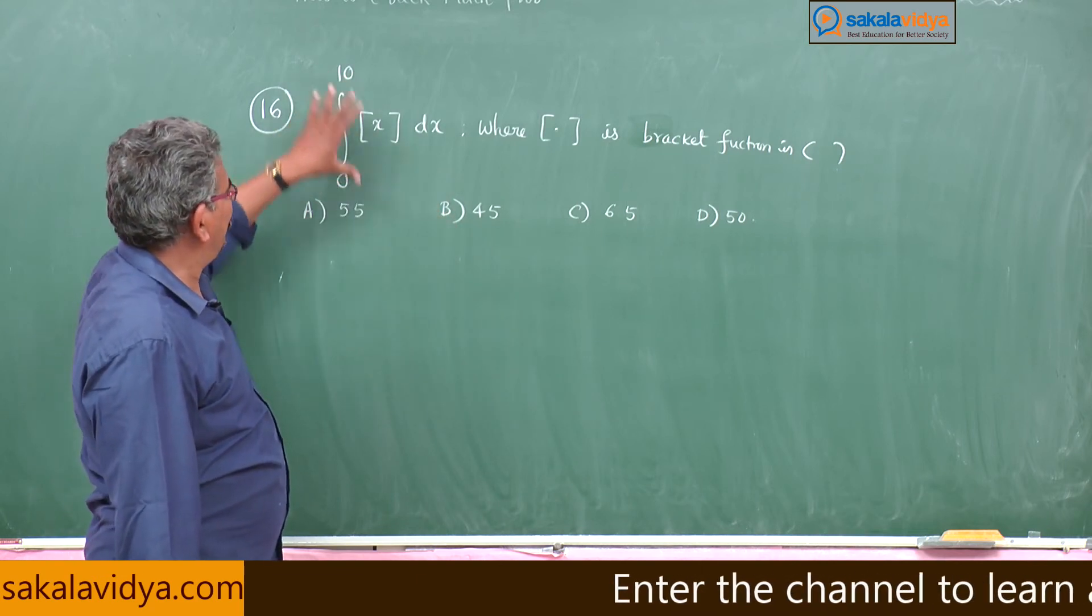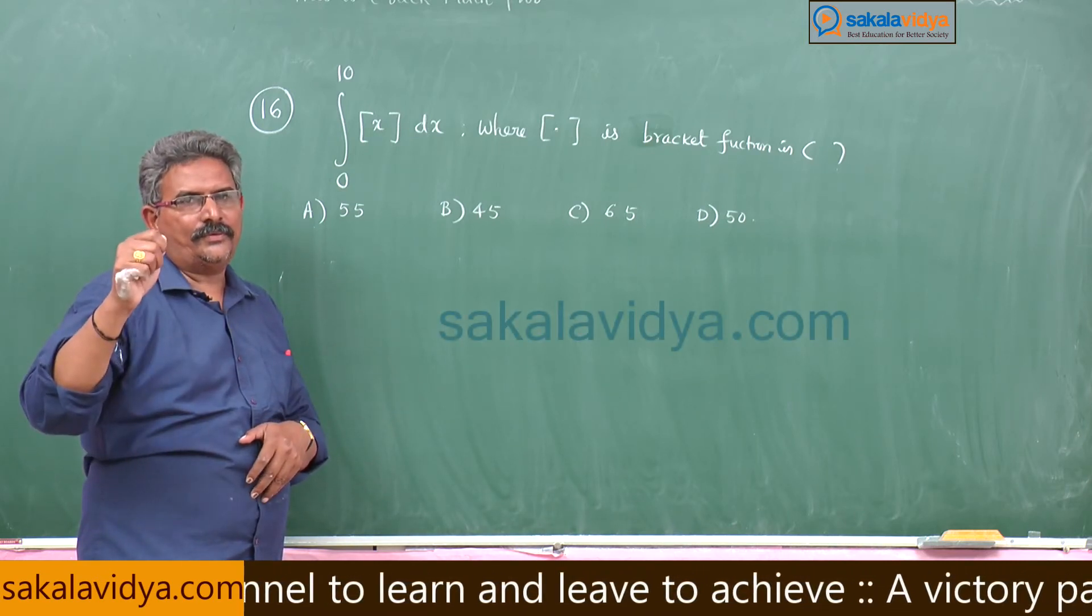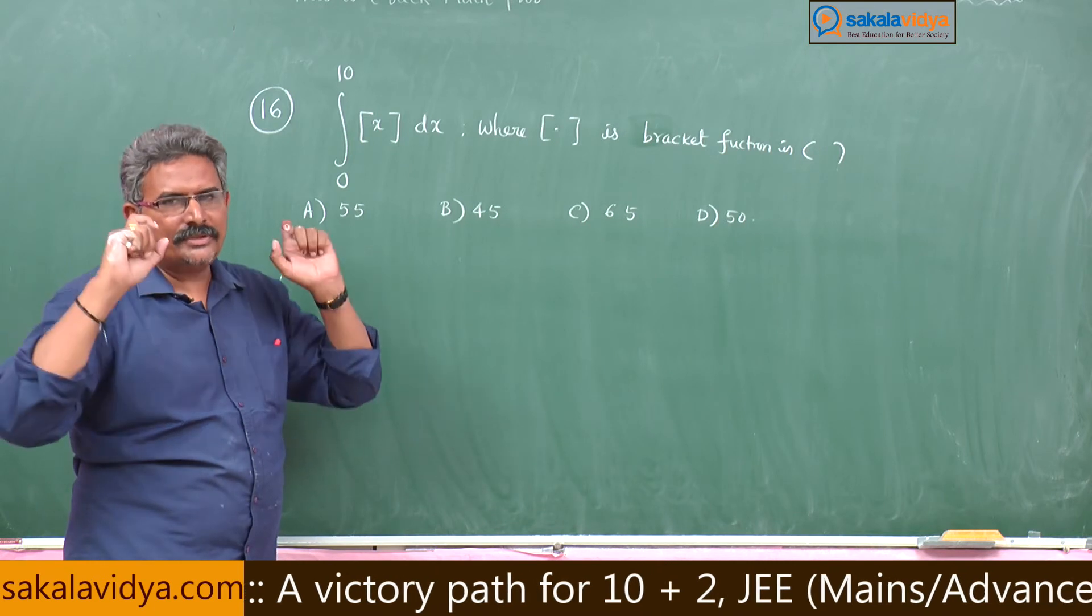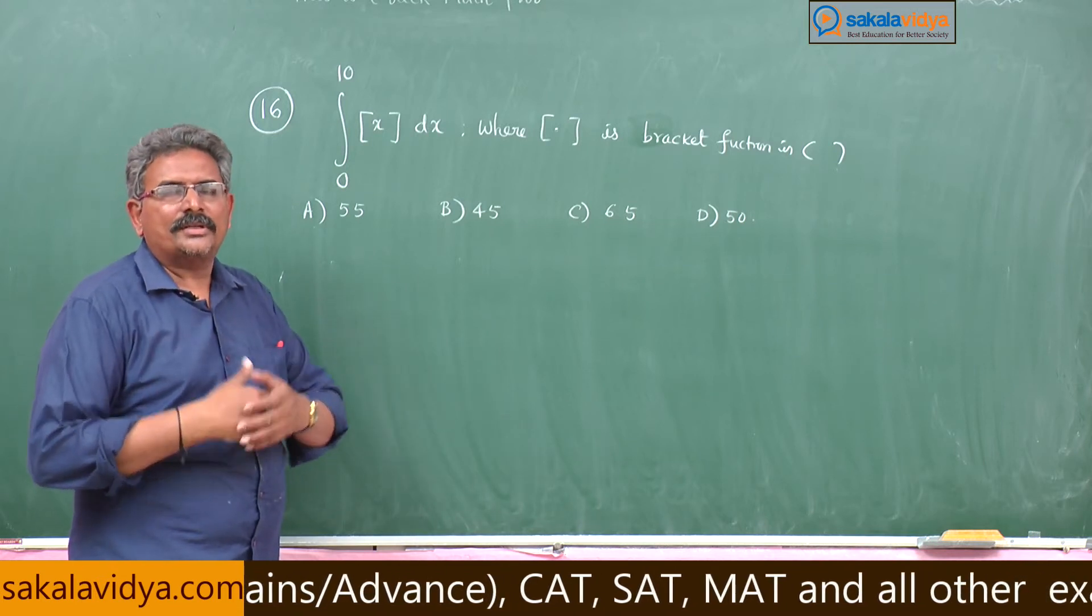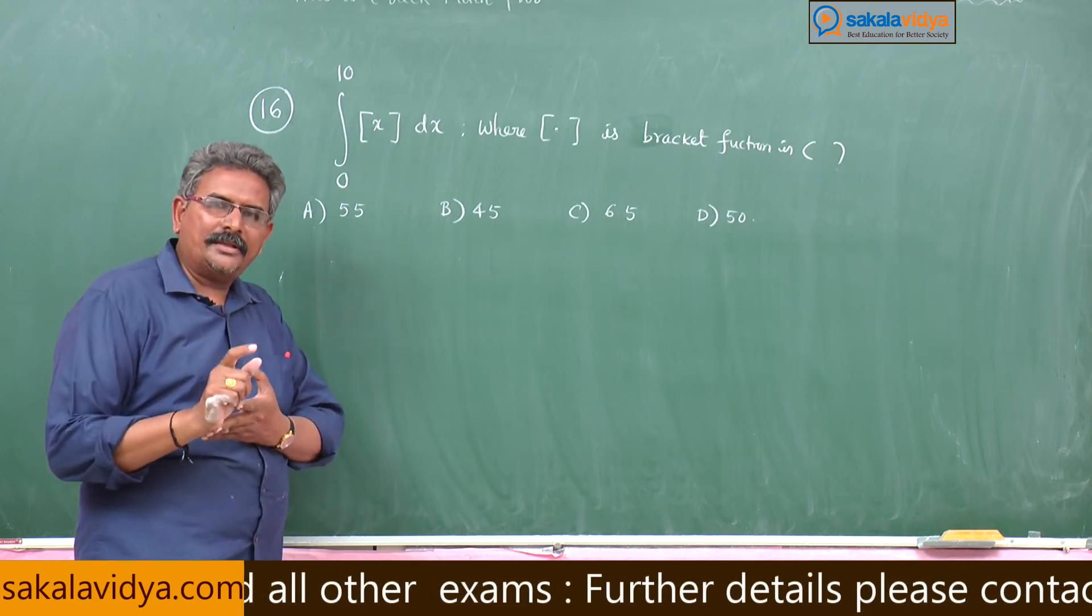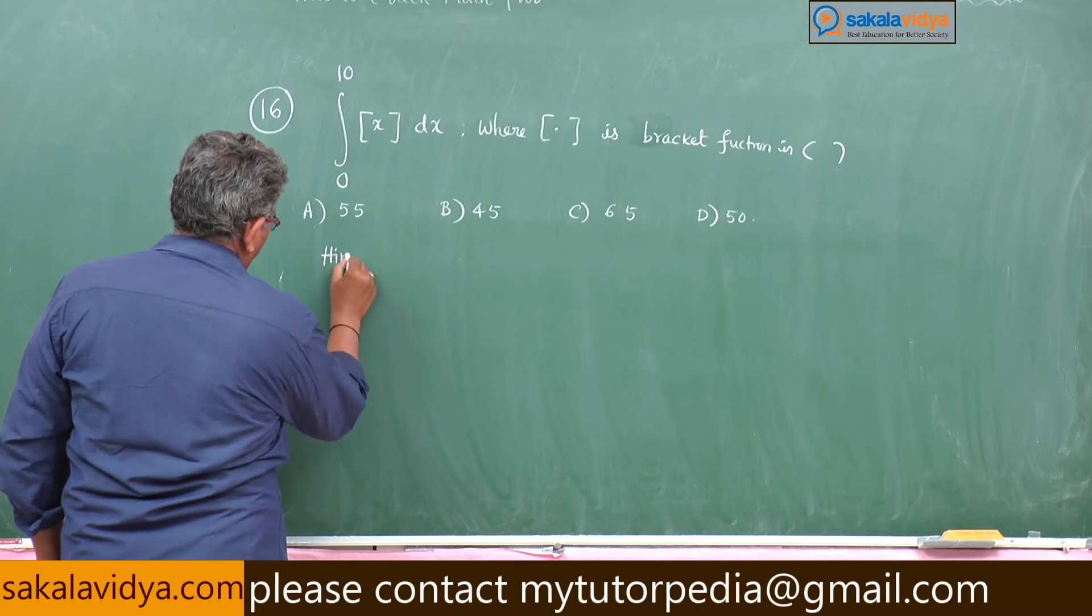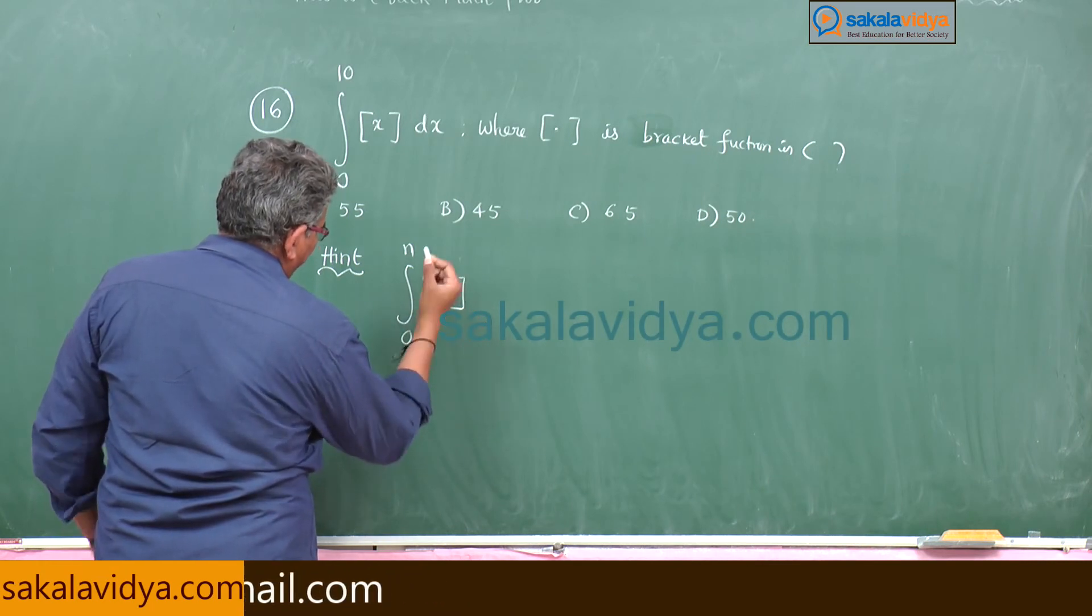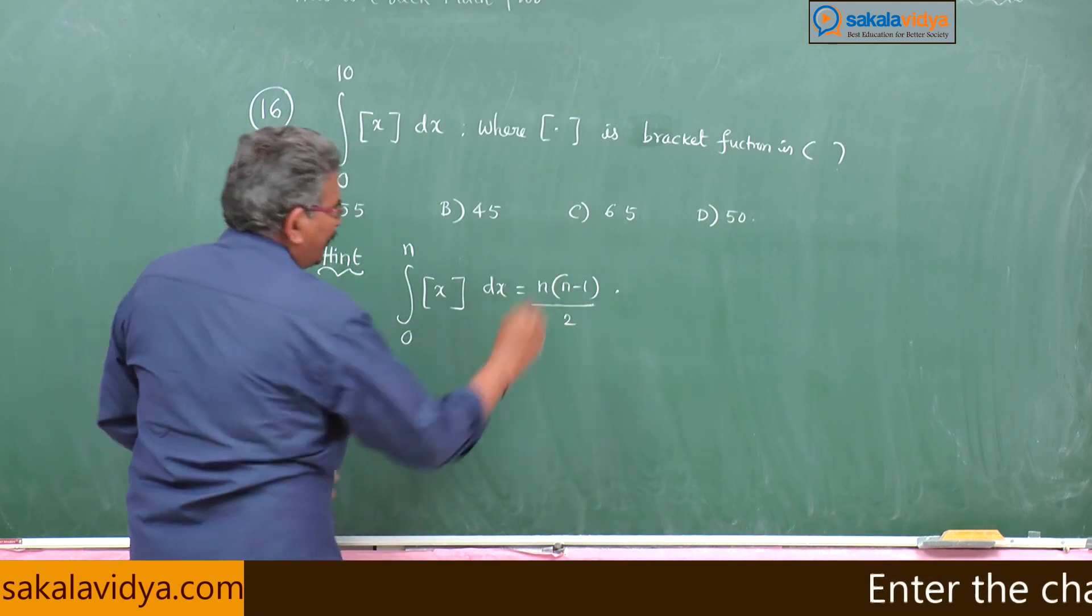Generally 0 to 10 means we have to break into intervals 0 to 1, 1 to 2, 2 to 3, up to 9 to 10. In those intervals, we have to define the bracket function values, integrate it, and get the sum. That's a very lengthy traditional method. Instead, you can solve this problem using a very simple technique. The hint: integral 0 to n of [x]dx is given by n(n-1)/2.